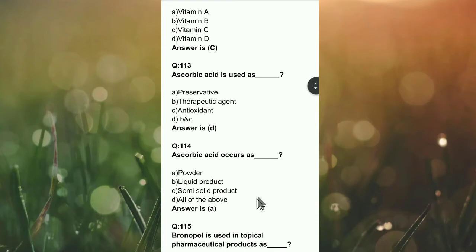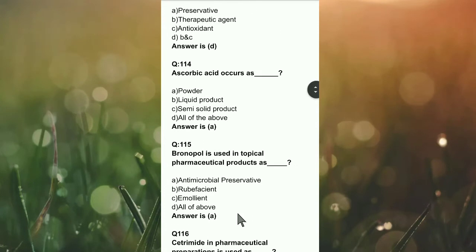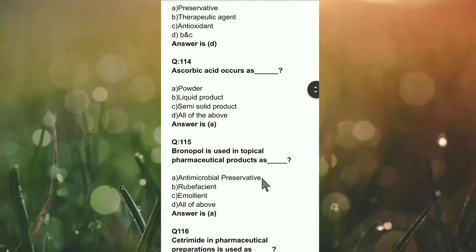Question number 114: Ascorbic acid occurs as powder form, liquid form, semi-solid product, or all of the above? The right answer is A — it appears as a powder form.